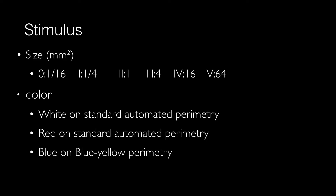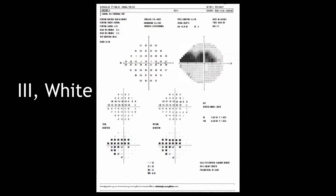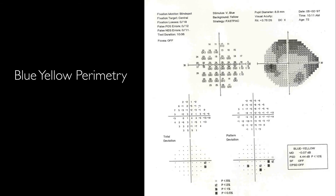We have five different stimuli in the Humphrey visual field and we generally use size three and five. In terms of color we have white, red, and blue. If we choose size three and white, because the machine has a normal database for this stimulus, we will get a three-in-one printout. In blue-yellow perimetry there is a normal database for stimulus size five color blue, therefore we also get a three-in-one printout.